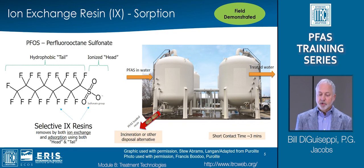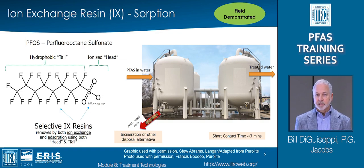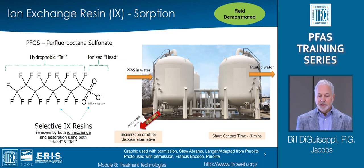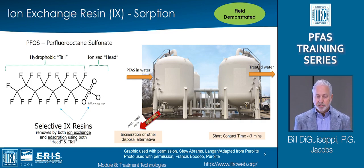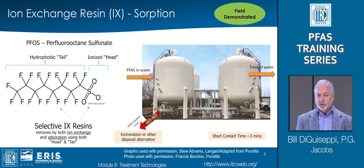Sorption to ion-exchange resin is the next most widely used ex-situ PFAS treatment technology. Ion-exchange media are particularly effective because they capitalize on both the adsorption of the hydrophobic tail, similar to carbon, as well as the ion-exchange capacity of the anionic hydrophilic head, which is the sulfonate or carboxylate functional group. Carbon and ion-exchange can be used in series using two or more vessels, with ion-exchange typically being after the carbon to minimize mass loading and extend the bed life of the generally more expensive ion-exchange resin. This allows effluent concentrations to remain low or non-detect even after partial breakthrough of the carbon by specific PFAS.